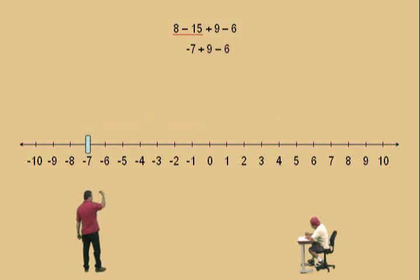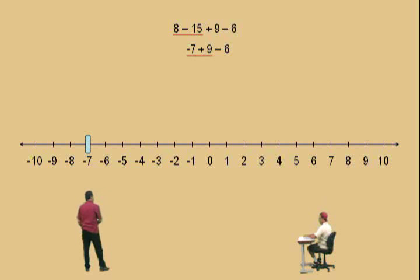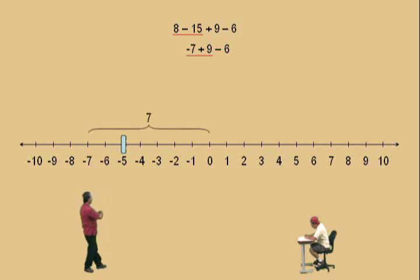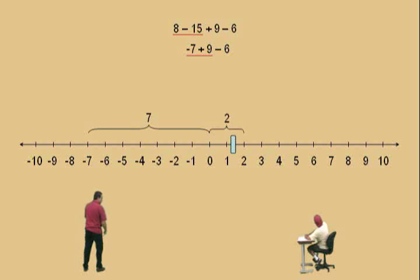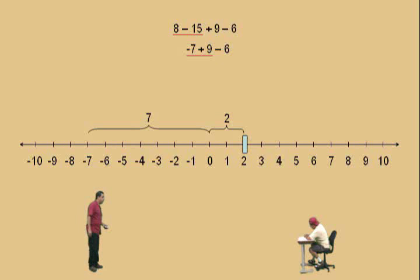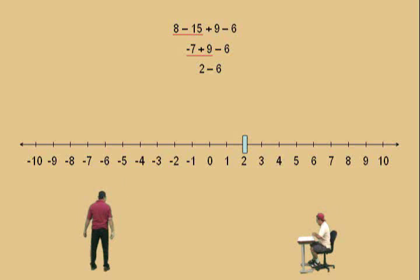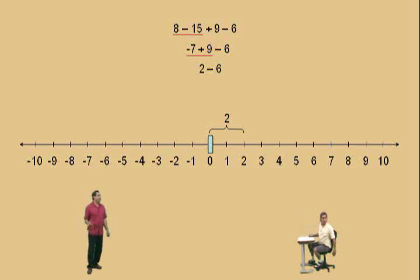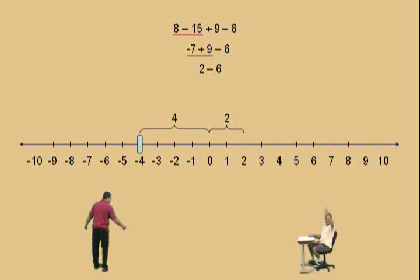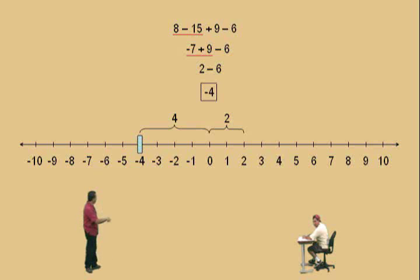Now we bring down our work: plus nine subtract six. We're at negative seven, and we have to move to the right nine times. We first move seven units to the right to reach zero, then two more, because negative seven plus nine equals two. Now bring down your work — we have to subtract six from two. Subtract six means move to the left six times: first move two to reach zero, then four more, so our answer is negative four. Don't forget to box your answer.